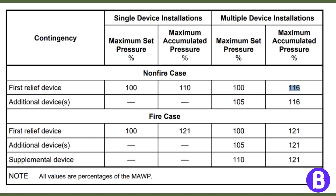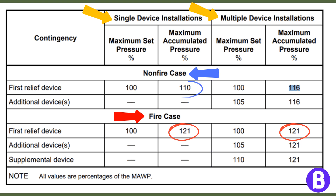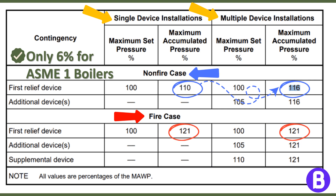From this table, API 520 shows the overpressure limits for single and multiple installations of a pressure safety valve. For the fire case, ASME Section 8 designates the pressure accumulation limit to be 121% of the vessel's maximum allowable working pressure. For other overpressure cases, the accumulation limit is 110% for single valves and 116% for multiple valves. For ASME Section 1 coded boilers, the accumulation is even more stringent, as only 6% overpressure is accepted.